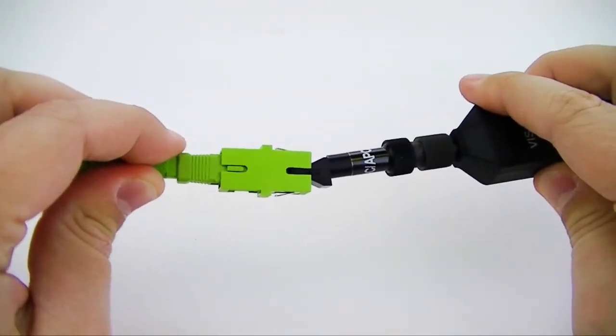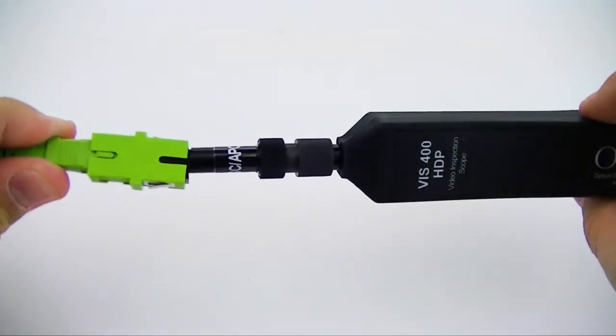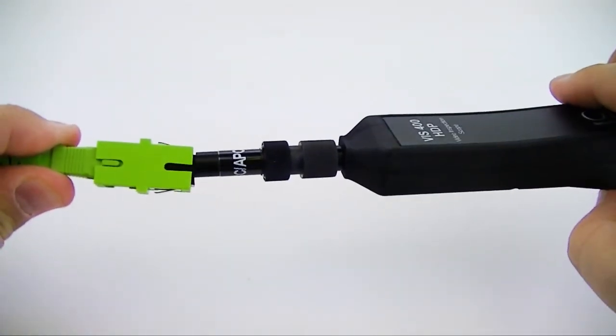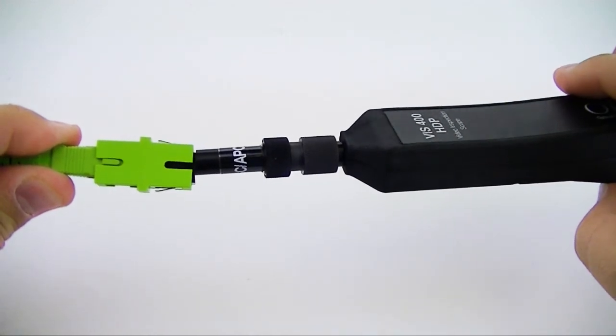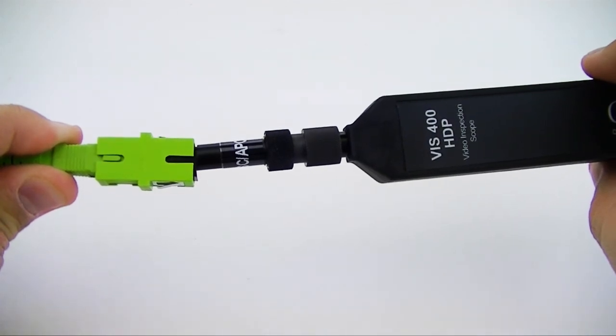The simplex adapter ensures that the fiber end and inspection scope will be mated at the correct angle. Since the tip and the fiber are already mated correctly, the test technician can simply rotate their VIS-300 or 400 unit to focus the image of the fiber end and complete their inspection.